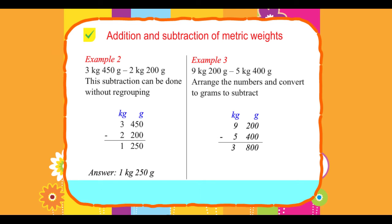kg grams: 9 200 minus 5 400 equals 3 800. Answer: 3 kg 800 grams.